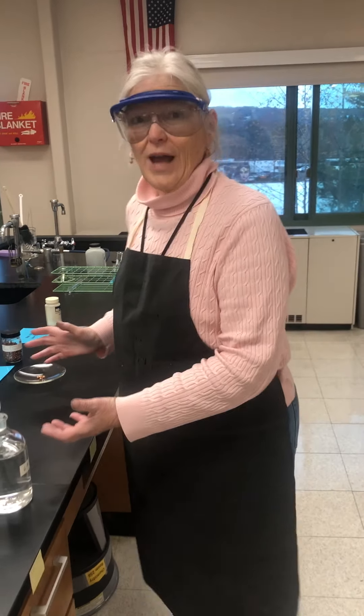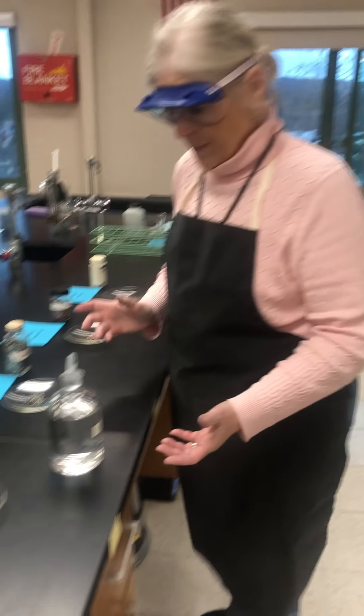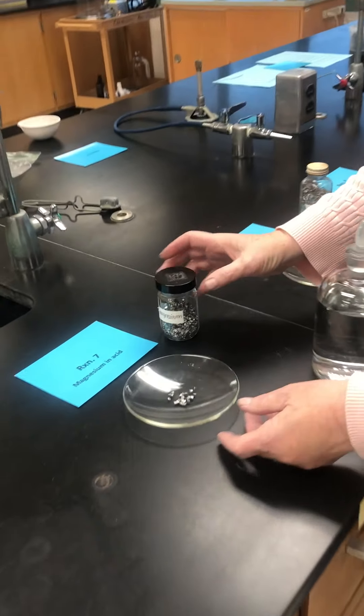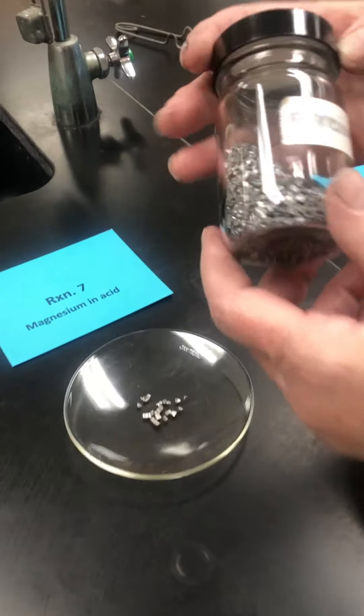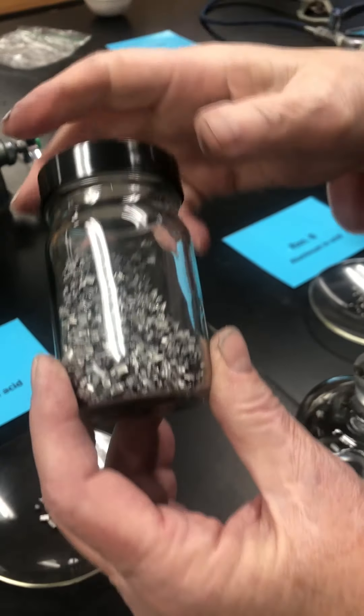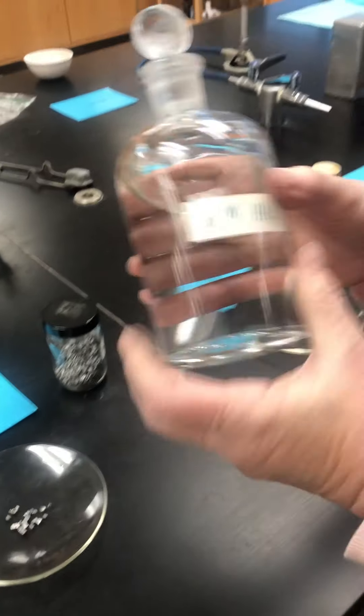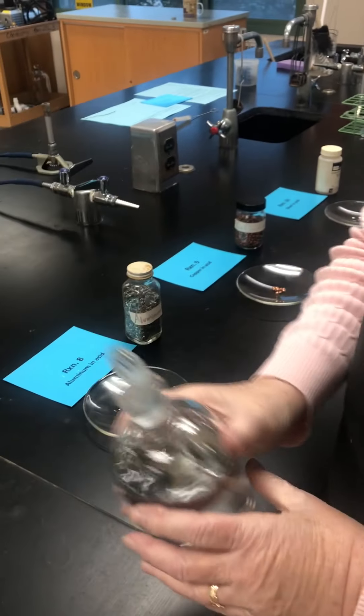Here I'm doing four reactions at the same time. Reaction seven is going to be magnesium, and here I have magnesium chunks, not ribbon, into which I'm going to pour six molar hydrochloric acid.